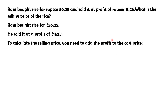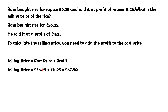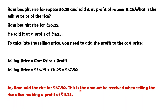Selling price equals cost price plus profit. Cost price is Rs.56.25 and the profit is Rs.11.25. Adding cost price and profit gives Rs.67.50. So he has sold the rice for Rs.67.50. This is the amount he received when selling the rice after making a profit of Rs.11.25.